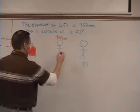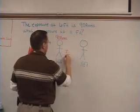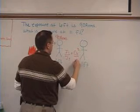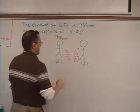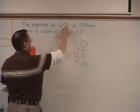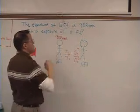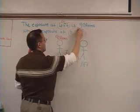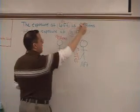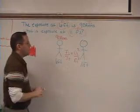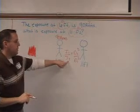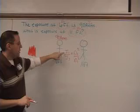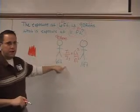So 6 feet is D1, that's the first distance, 11 feet is D2, the 90 is I1, and we're always going to be figuring out I2, that's the one we're always going to try to determine what it is. So you want to use those three numbers in this formula to find your missing answer.